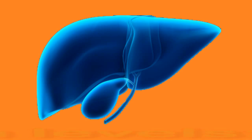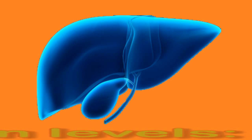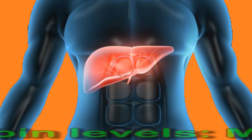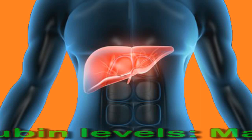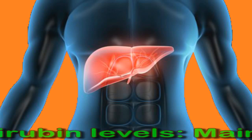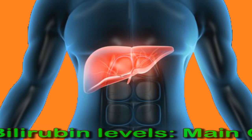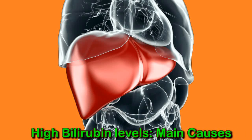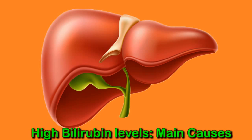High bilirubin levels — main causes. Bilirubin is formed by the breakdown of red blood cells in the body. The liver helps to excrete it. High levels of bilirubin can lead to jaundice, which is easily recognizable due to a yellowing of the skin and eyes. High bilirubin levels can occur in adults, but the disorder is more common in newborn infants.